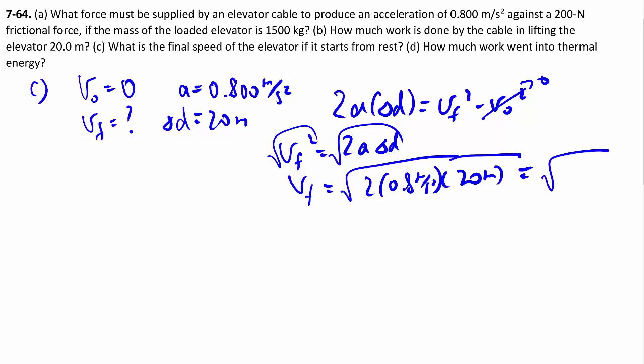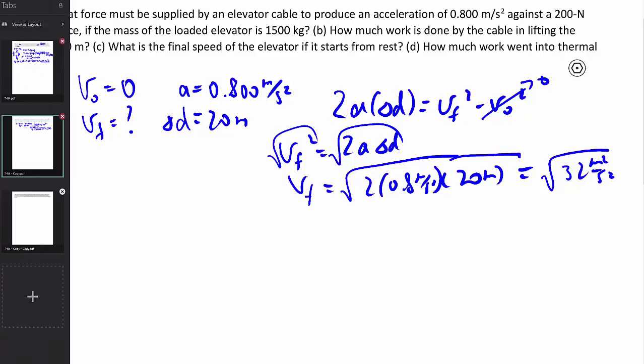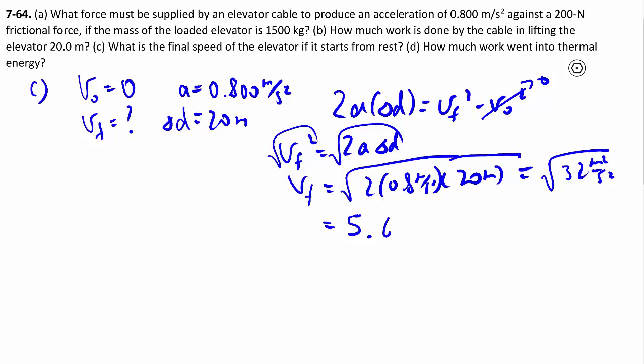Giving you square root of 32 meter squared per second squared. Number wise, it's 5.656 meters per second. So that's one way to solve it, using kinematics.